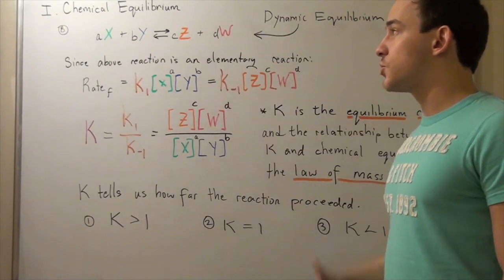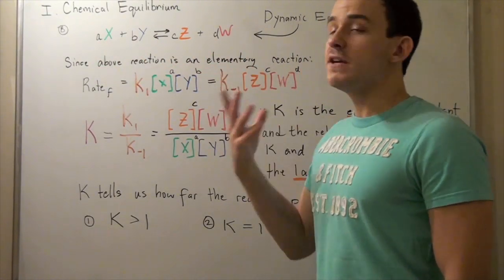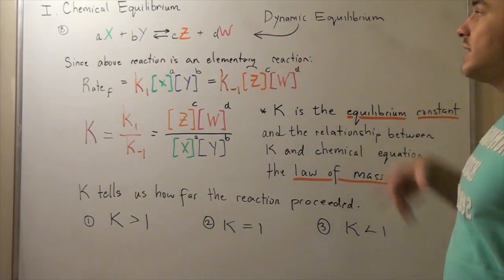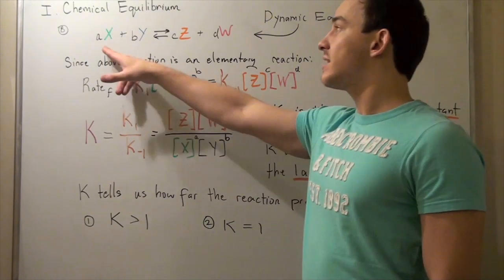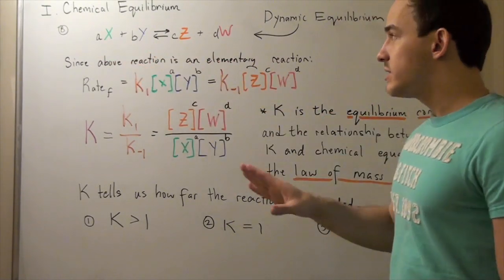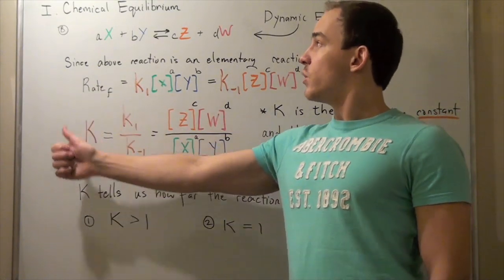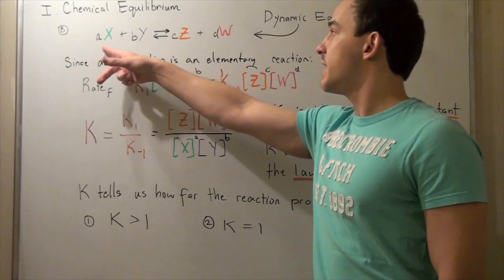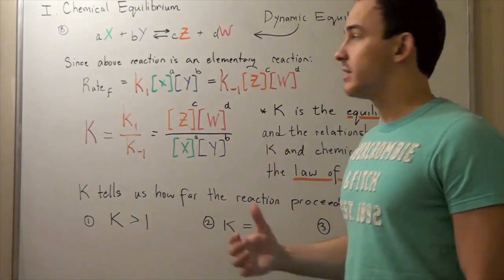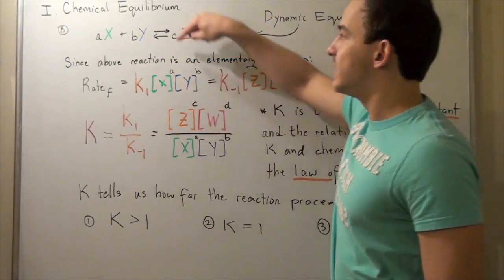Now let's suppose we have the following elementary reaction in which our reactants X and Y convert to our products Z and W. A, b, c, and d are the coefficients that represent the moles of each respective species. Let's suppose our reaction is at dynamic equilibrium — the rate at which X and Y are converting to Z and W is the same as the rate at which Z and W convert to X and Y. Since this is an elementary reaction, we can write the rate law for each direction using the coefficients. So the rate of our forward reaction equals k₁ times the concentration of X to the a power times the concentration of Y to the b power.